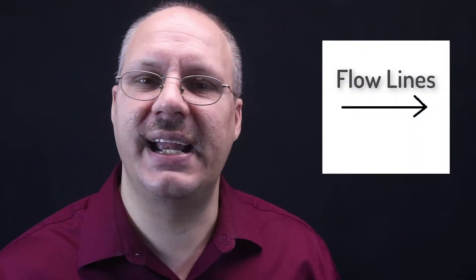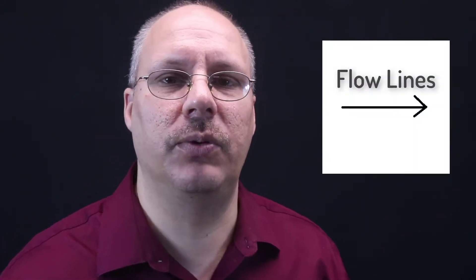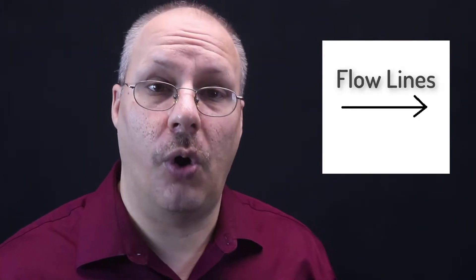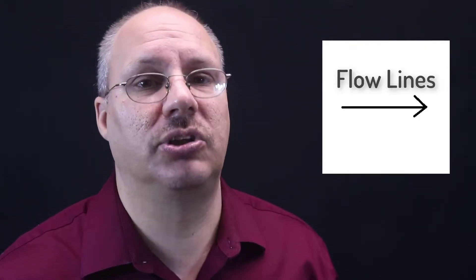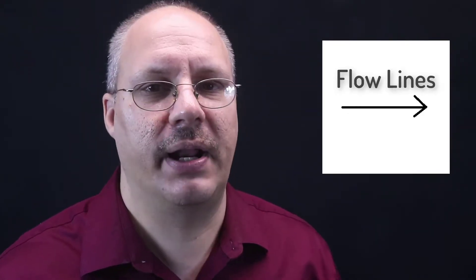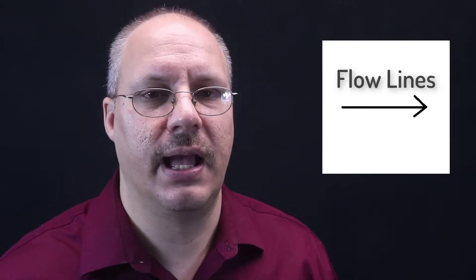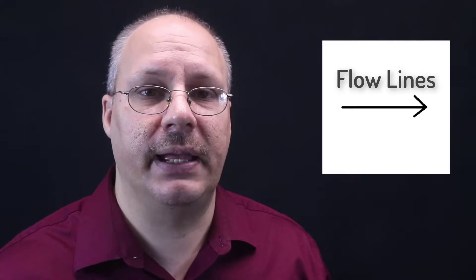Flowlines point us to the next block that we will execute. While you often see them point down, they may also point from side to side for a loop or decision because you run out of space. Typically, flowlines are straight at 90-degree increments and they will have a turn in them if they need to move to a different direction.